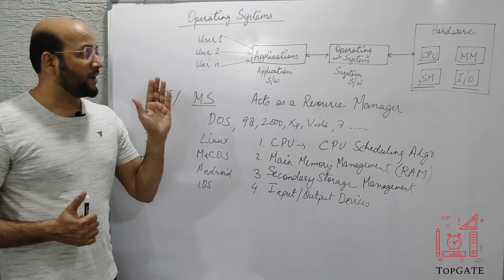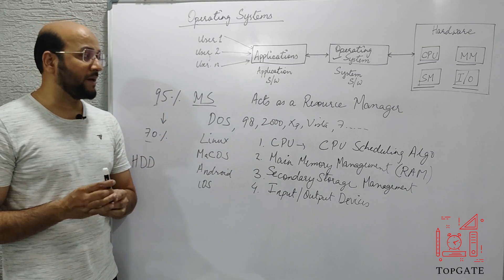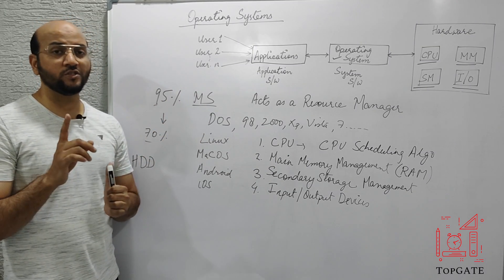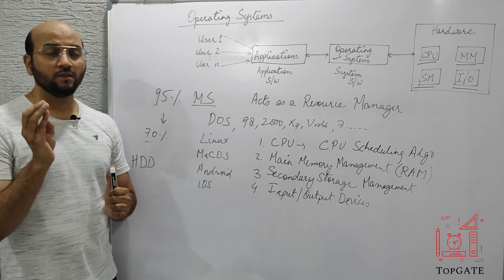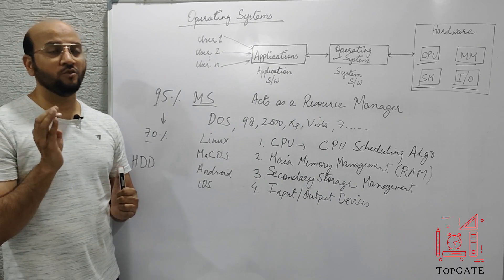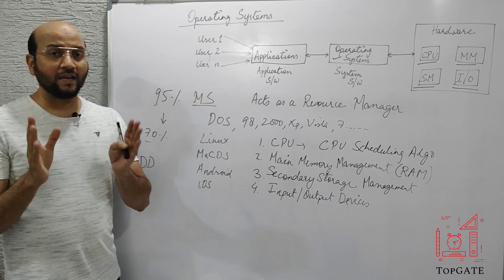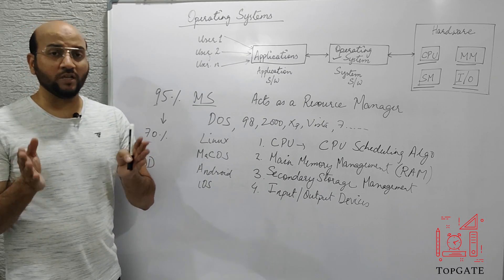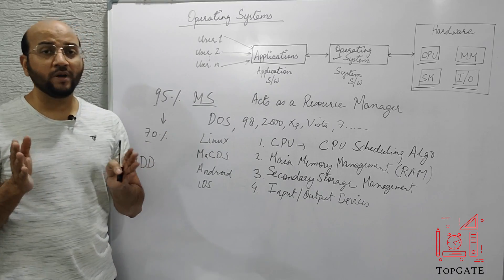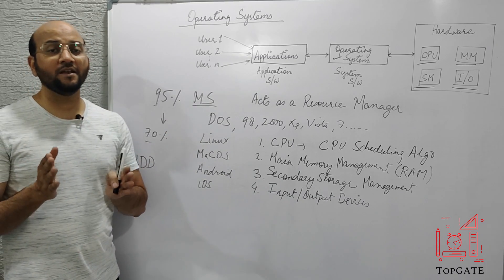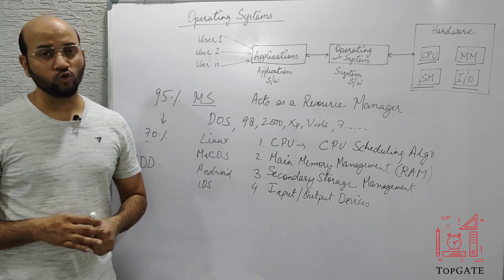To sum up: the operating system acts as a resource manager and it manages four resources. The first resource is the CPU, the second is the main memory, the third is the secondary memory, and the fourth is the input-output devices — that is your technical definition. And if we talk about the general definition, the layman's definition, it says that the operating system acts as an interface between the user and the hardware. Thank you so much.